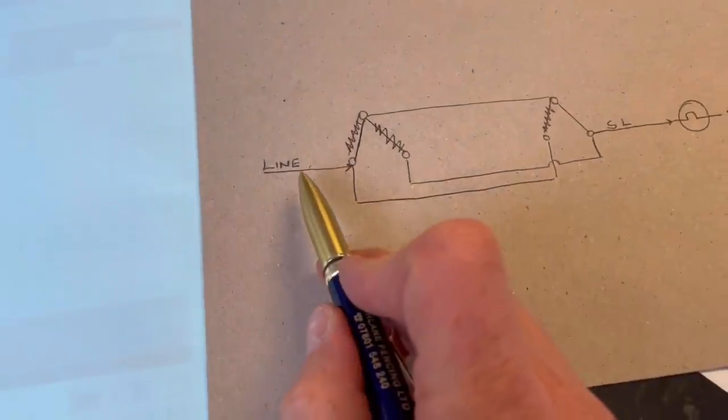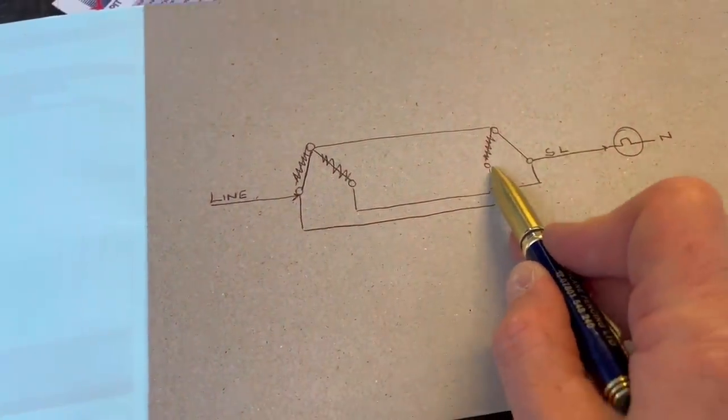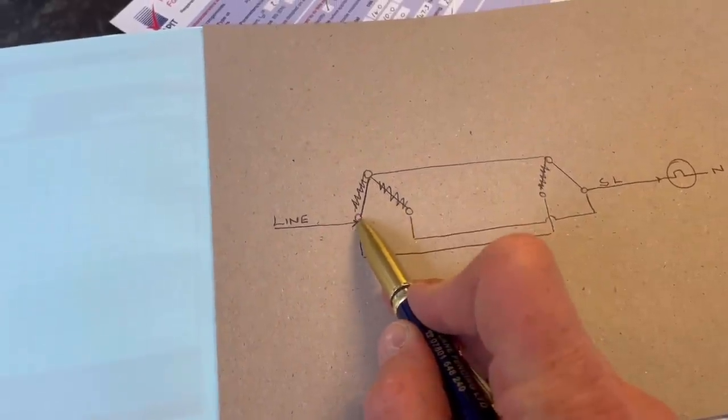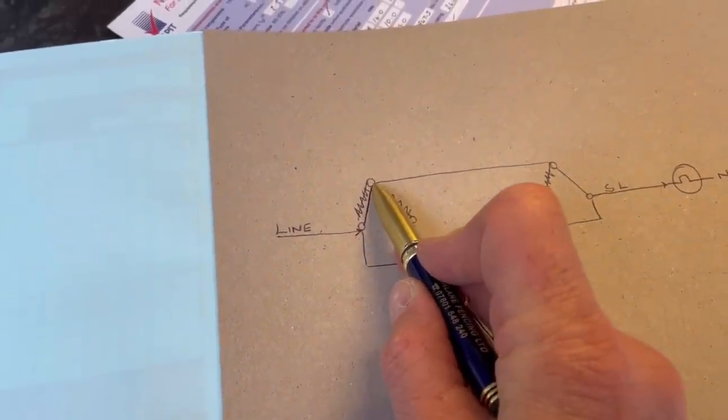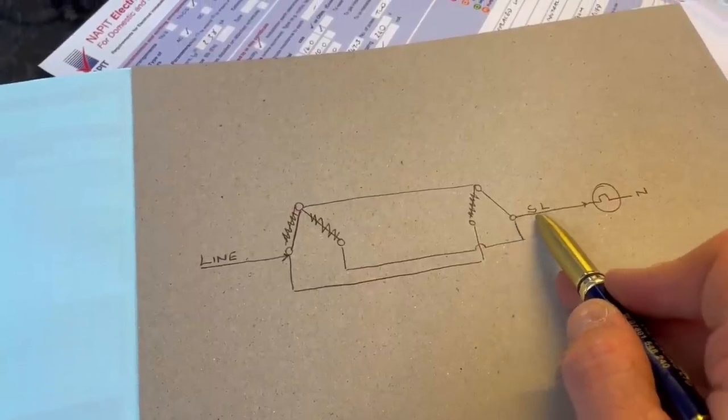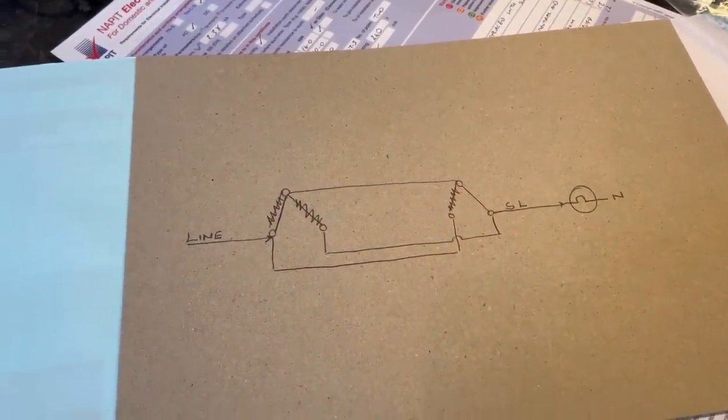Now what we see is this stays the same, so this stays live up to here. But now because this switch has moved across to here, it now goes up to the common, across to the common to the switch live, and the light then comes on. And that's just what we did on the video - nice and simple.